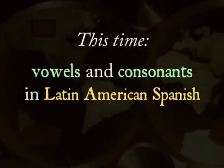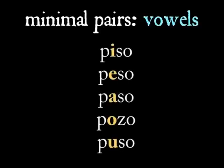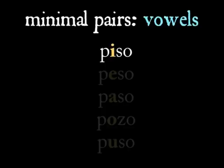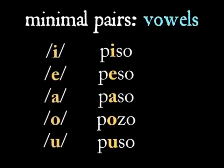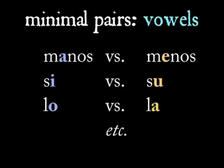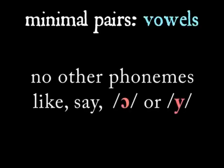We'll start with minimal pairs, which will allow us to document the phoneme inventory of Spanish. Such an inventory should contain all major contrasting phonemes. Here are five words that differ minimally. We can infer that I, E, A, O, and U are vowel phonemes. Other minimal pairs confirm that these five vowels are distinct from one another, and that there isn't a sixth or seventh vowel beyond these five that contrasts with them.